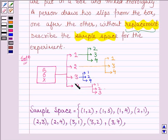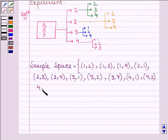And if the first slip has number 4, then the other slip has numbers 1, 2, or 3. So the sample points are (4, 1), (4, 2), and (4, 3).